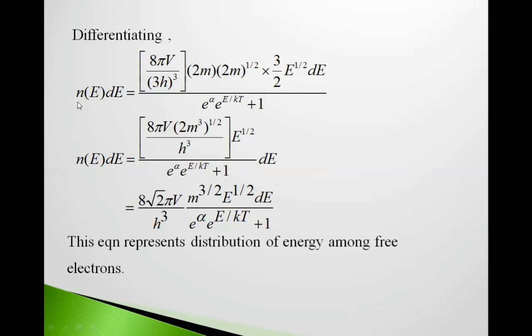Differentiating, n(E)dE = 8πV/(h³) × (2m)^(3/2) × 3/2 × E^(1/2)dE / (e^(α+E/kT)+1). So n(E)dE = 8πV(2m)³/² E^(1/2)dE / (h³(e^(α+E/kT)+1)).